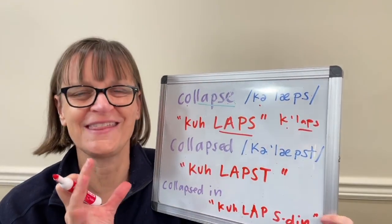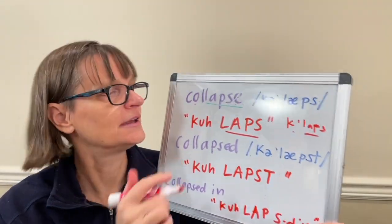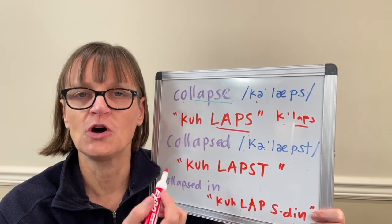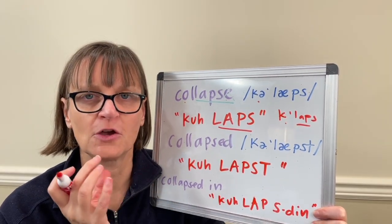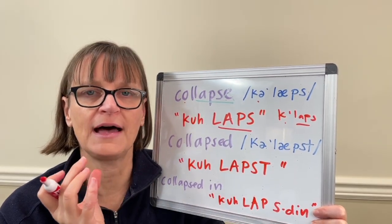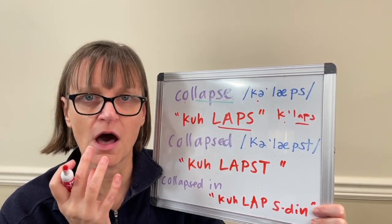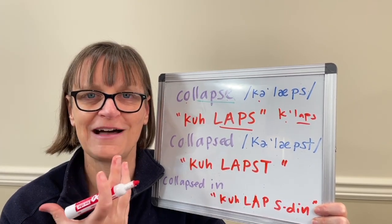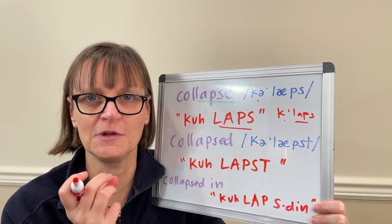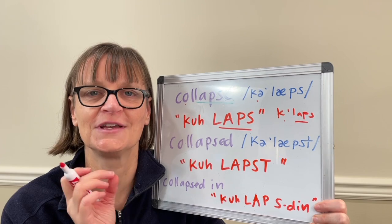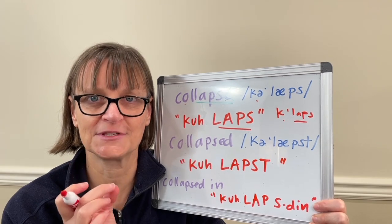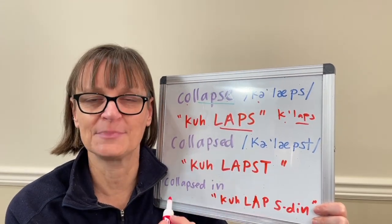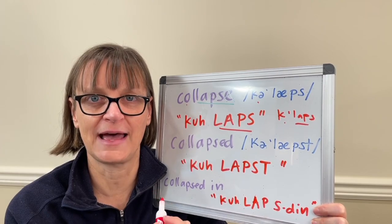So you can really think about that first part being short. When we see the letters CO or COL, we might want to use a true clear vowel there, but you really want it to be very short and reduced: collapse. That's why starting with lapse can be helpful. Lapse... collapse.